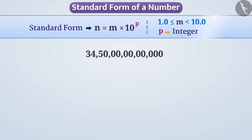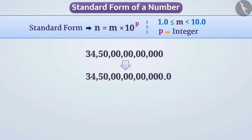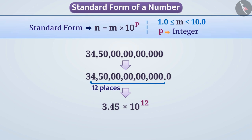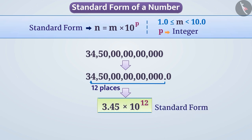Let us now find out how to write large numbers in standard form. Suppose we have to write this number in standard form. We have to represent it in the form of m into 10 to the power of p, where m is greater than 1 and less than 10.0 and p is an integer. For this, we will first place a decimal point on its right side. Moving the decimal point 12 places towards the left, we get the number 3.45, which is greater than 1.0 but smaller than 10.0. So 3.45 is the value of m. Since we moved the decimal point 12 places towards the left, we multiply by 10 to the power of 12 so that there is no change in the value of this number. Thus the value of p is 12, giving us the standard form 3.45 into 10 to the power of 12.